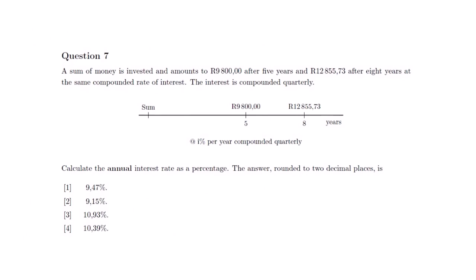Our next question is question 7. It says: a sum of money is invested and amounts to $9,800 after 5 years and $12,855.73 after 8 years at the same compounded rate of interest. The interest is compounded quarterly. We can see the number line — we have a particular sum, and from year 5 we have $9,800 up to year 8 whereby we have $12,855.73.